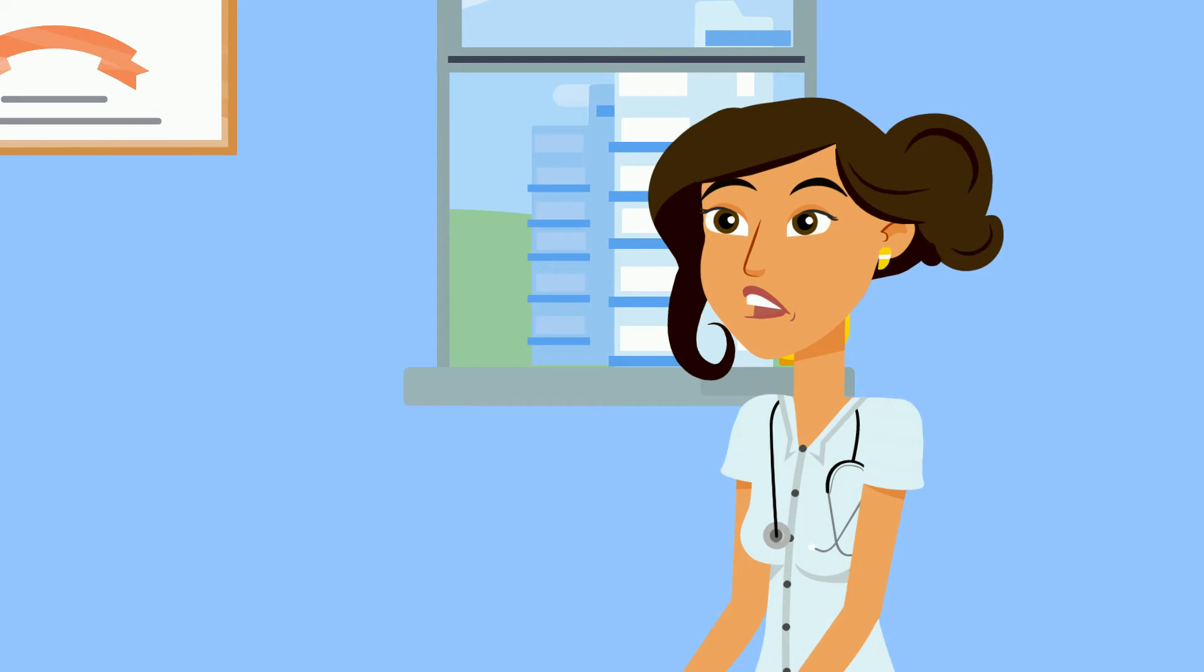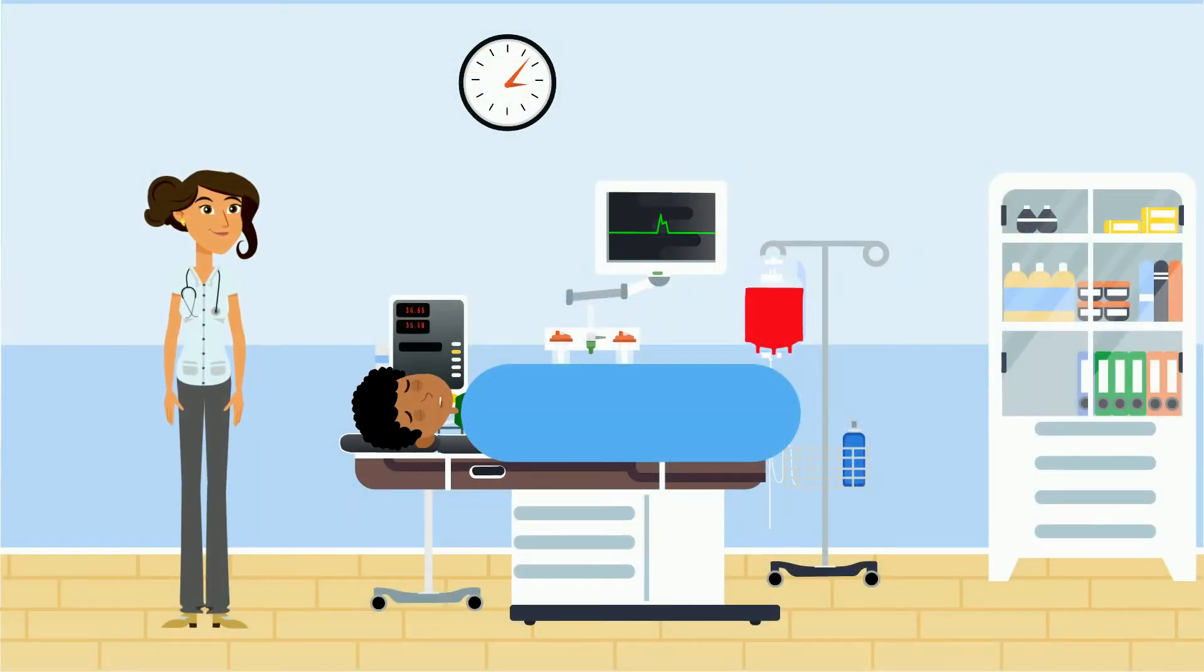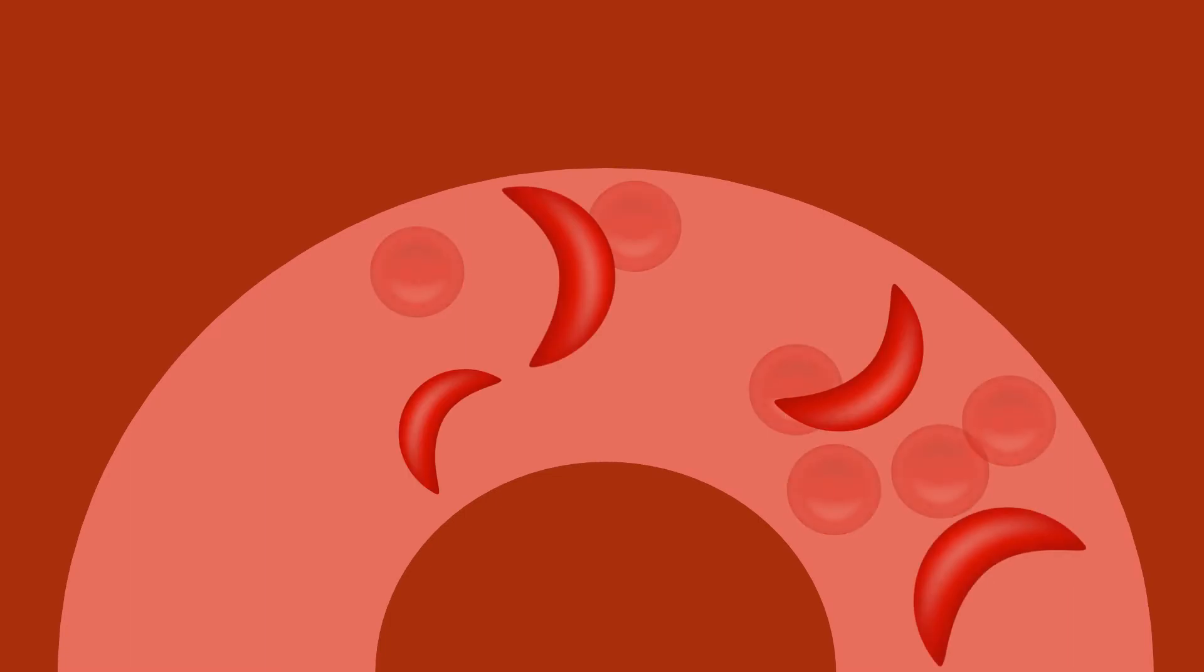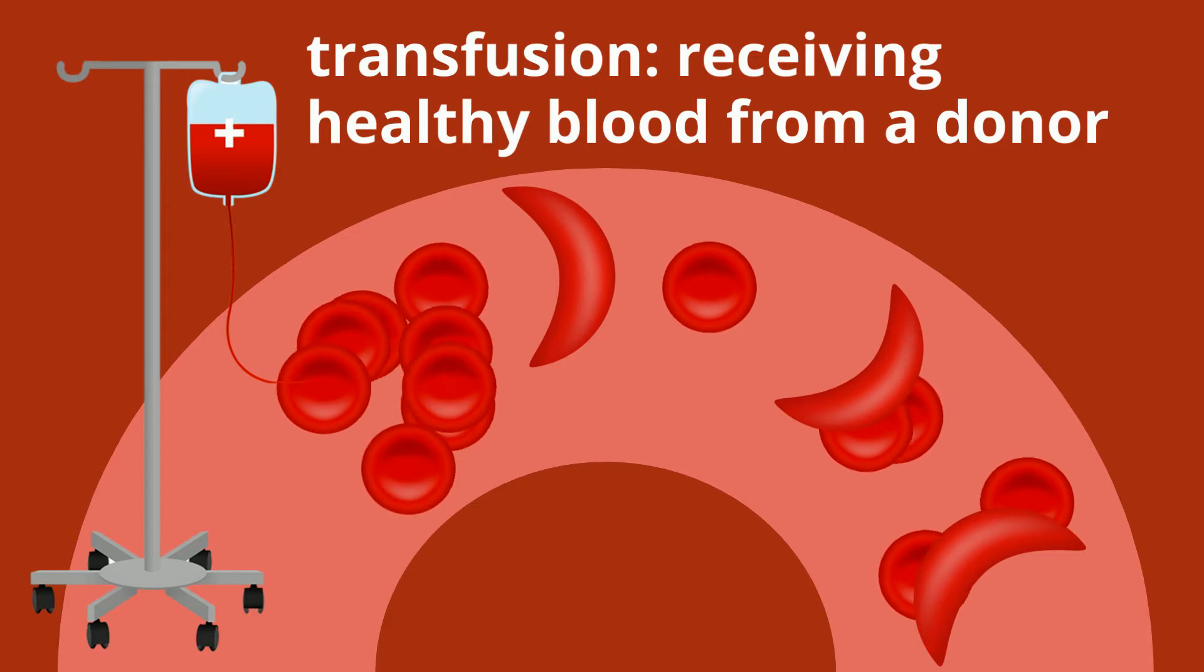A blood transfusion is when healthy blood from a donor, someone else with the same blood type as you who does not have sickle cell disease, is put into your body. A blood transfusion helps because it unblocks the traffic jam in the blood vessels and improves the blood flow and delivery of oxygen.